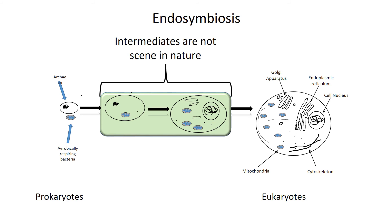One other interesting thing about endosymbiosis: it almost certainly occurred just one time. And that explains the similarity amongst all eukaryotes. Plants and animals are pretty similar at the cellular level. When we look around the world, we see two types of cells — prokaryotes and eukaryotes — and we don't see the intermediates in nature. We see intermediates in the fossil record with plants and animals, and some animals today, like horseshoe crabs, have remained unchanged for hundreds of millions of years — we call those living fossils. But not so with prokaryotes and eukaryotes.